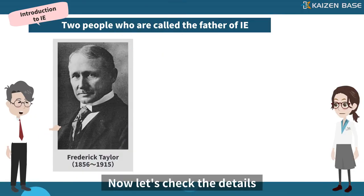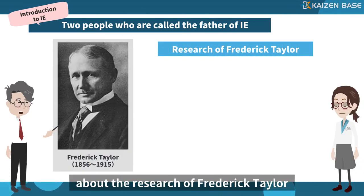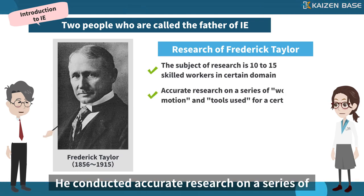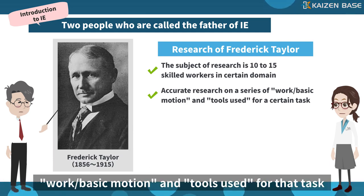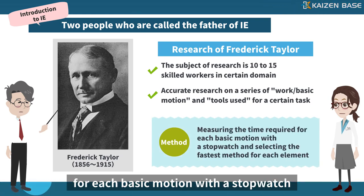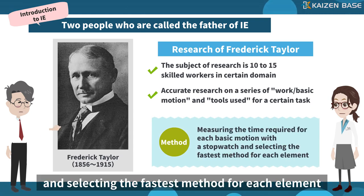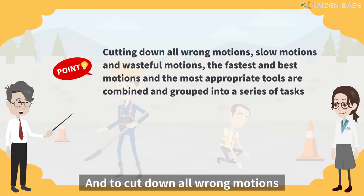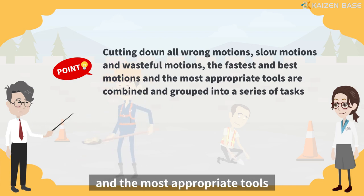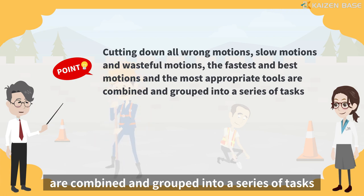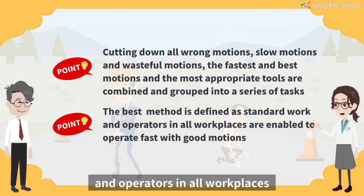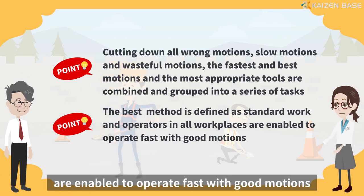Now let's check the details about the research of Frederick Taylor. Taylor conducted research on 10 to 15 skilled workers in a certain domain. He conducted accurate research on a series of work basic motions and tools used for each task. The method was to measure the time required for each basic motion with a stopwatch and select the fastest method for each element, cutting down all wrong motions, slow motions, and wasteful motions. The fastest and best motions and the most appropriate tools were combined into a series of tasks, with the aim of defining the best method as standard work so that operators in all workplaces could operate fast with good motions.